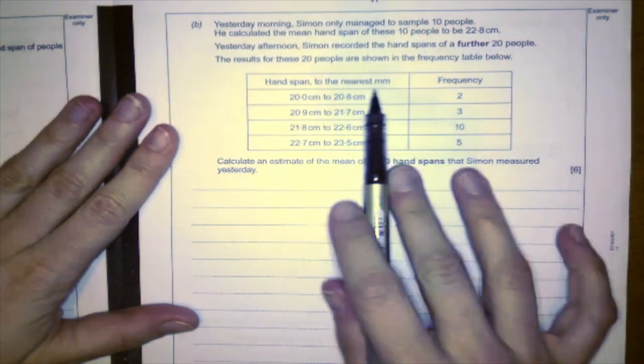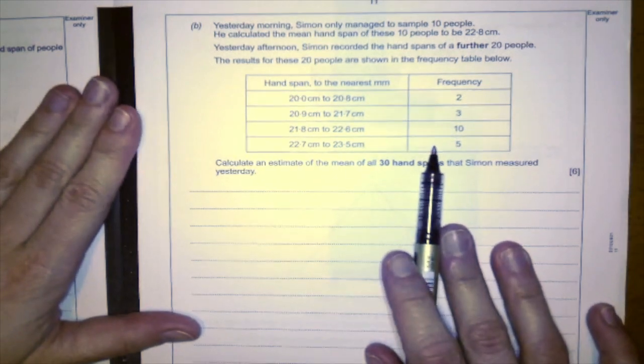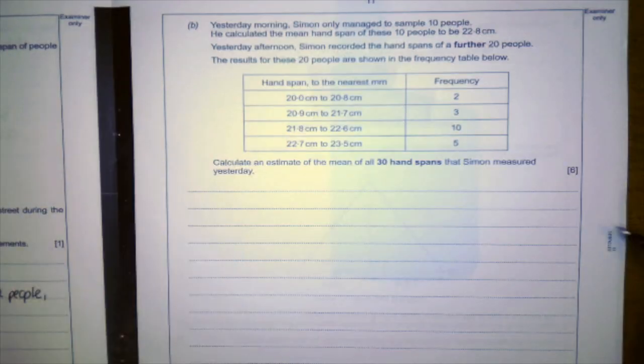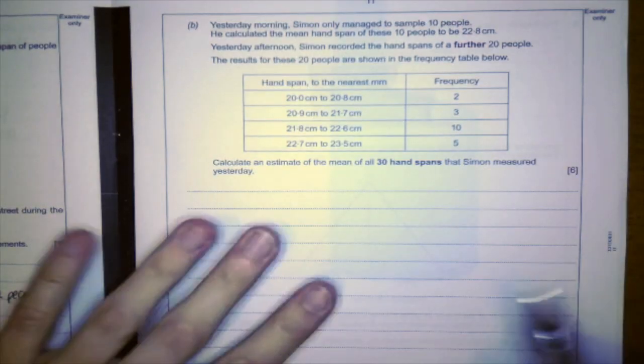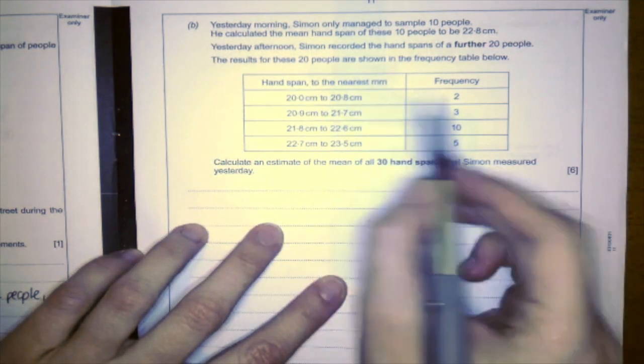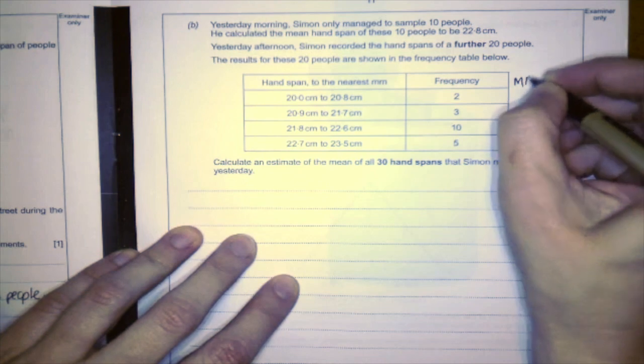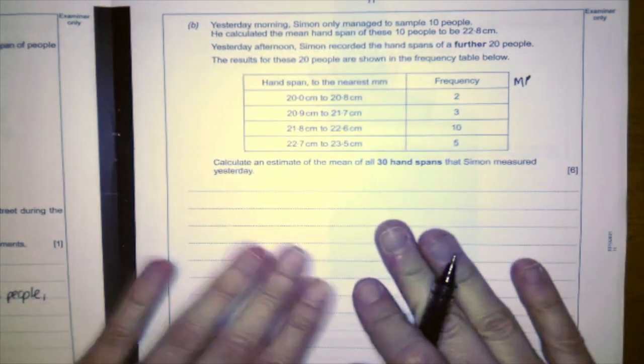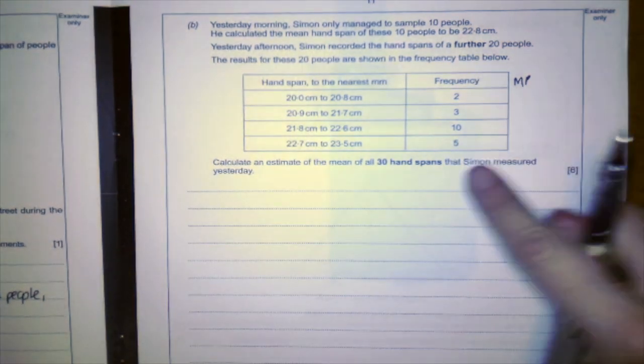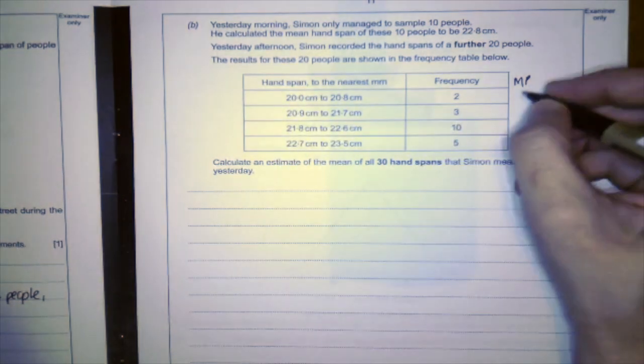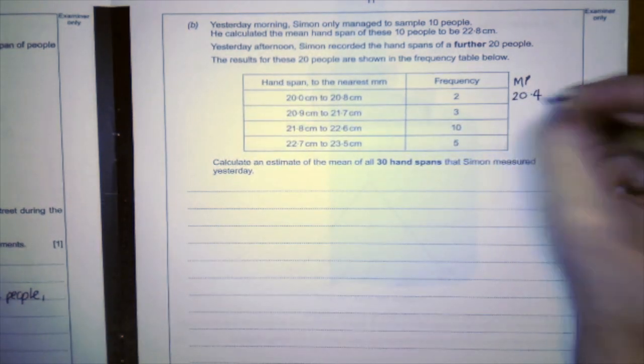Okay, so if we estimate the mean here, we're going to find out the total of the 20 people. So I need to do the midpoint times by the frequency. So I'm going to do an extra column here for midpoint. It doesn't matter that you don't do it down here; the examiner will still see it up here. So the midpoint of 20 to 20.8 is 20.4.